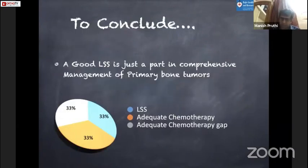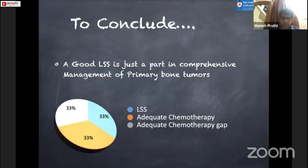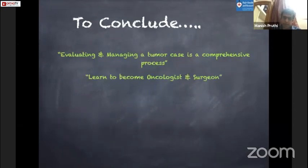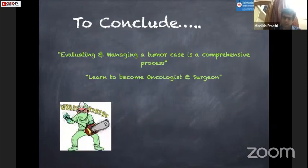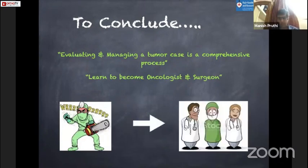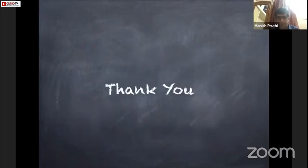To conclude: a good limb salvage surgery is just one part of the comprehensive management of primary bone tumors. Limb salvage, adequate chemotherapy, and an appropriate chemotherapy gap are all very relevant. Evaluating and managing a tumor is a comprehensive process — we should learn to be oncologists as well as surgeons. The orthopedic surgeon is part of a team working to get the patient the optimal functional and oncological outcome.